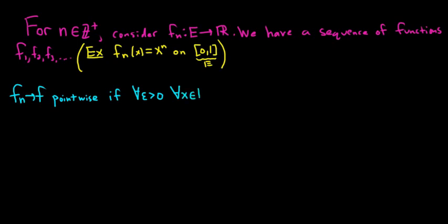we can find some positive integer N such that for all little n bigger than capital N, the difference between f sub n of x and f of x is less than epsilon.